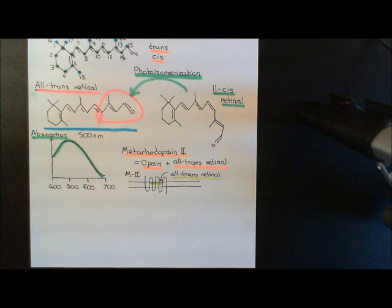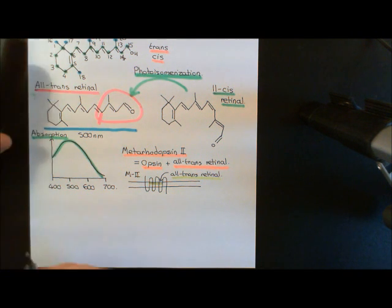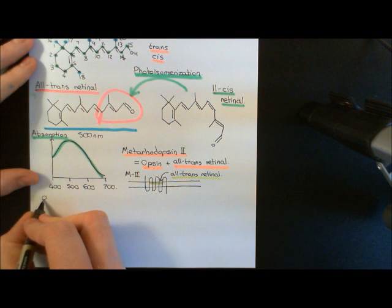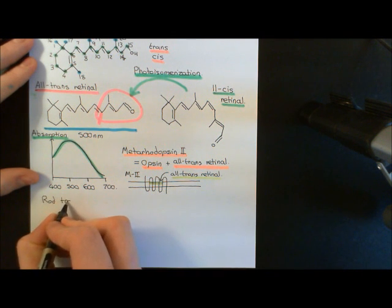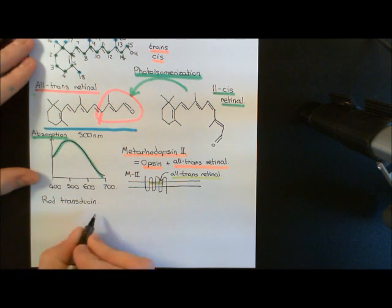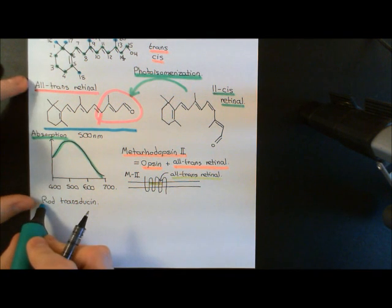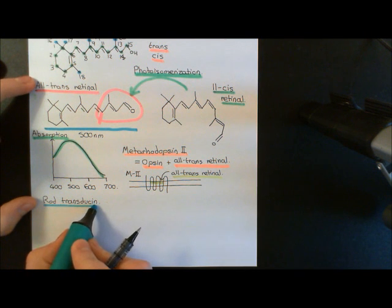If you know anything about G-protein coupled receptor signaling, you'll know that G-protein coupled receptors, once they're in the active state, are going to activate heterotrimeric G-proteins. Metarhodopsin-2 is going to activate a heterotrimeric G-protein by the name of rod transducin. We should specifically say rod transducin, because we are discussing the phototransduction pathway in rod cells, and the transducin heterotrimeric G-protein is different between rod and cone cells — it does the same thing, but it is fundamentally a different protein.